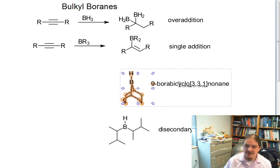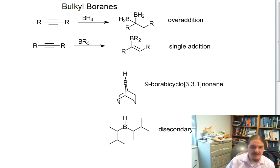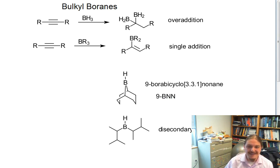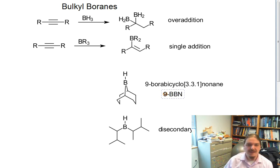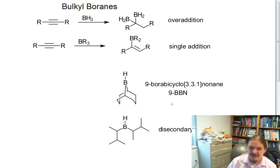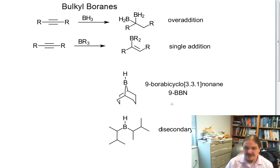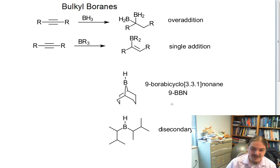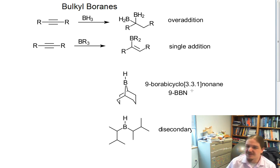On the bottom of the slide, I have two structures of some commonly used bulky borines. The first one, 9-borabicyclononane, is given an abbreviation: 9-BBN. I don't want to write out 9-borabicyclononane all the time, and certainly even established chemists are just as nervous about accurately representing complex polycyclic structures as students just learning, so let's use this abbreviation.